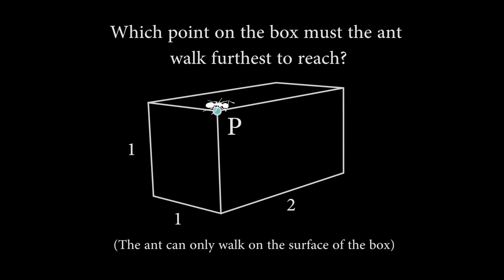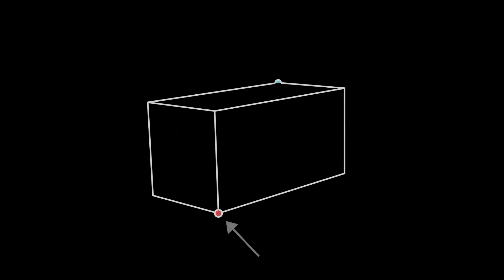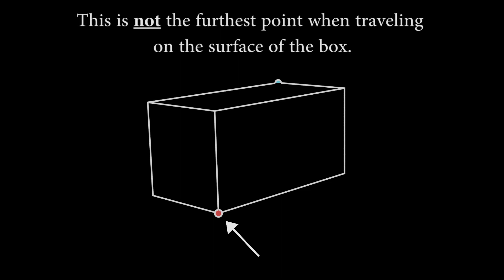If you're like me, your first guess might be that it's the vertex which lies exactly opposite from P. And this is not a bad guess, as this point is the greatest straight-line distance from P. But, perhaps surprisingly, for an ant walking on the surface of the box, this is not the furthest point.